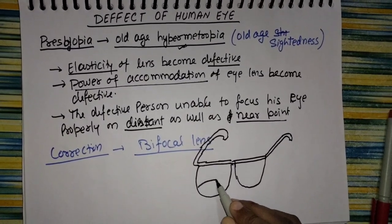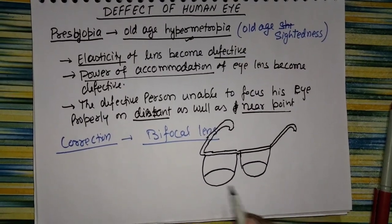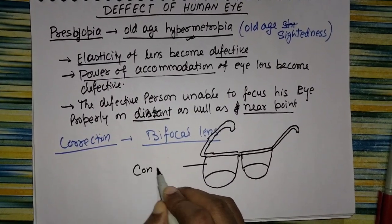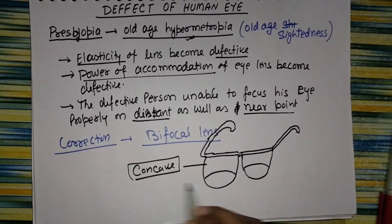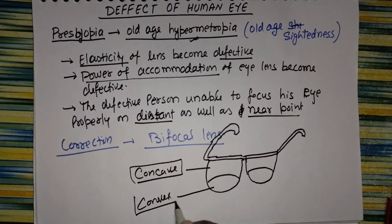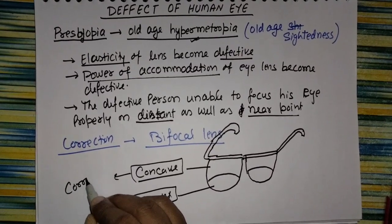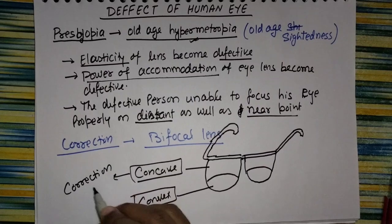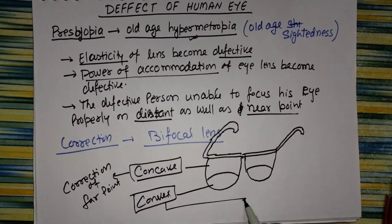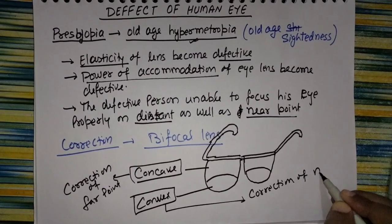This type of lens is used for old age people, typically around age 40 and 50. The upper lens is concave type and the lower lens is convex type. The concave upper lens corrects the far point. This is the correction for presbyopia.